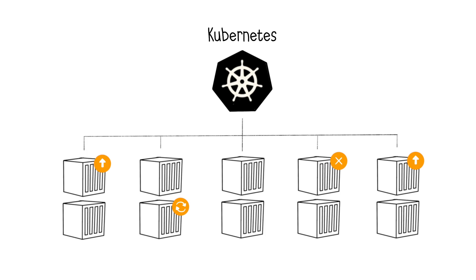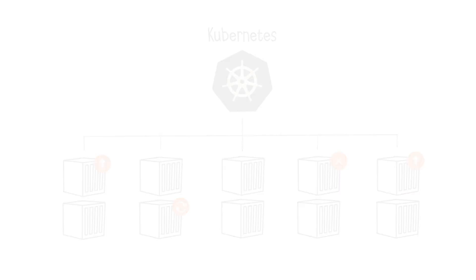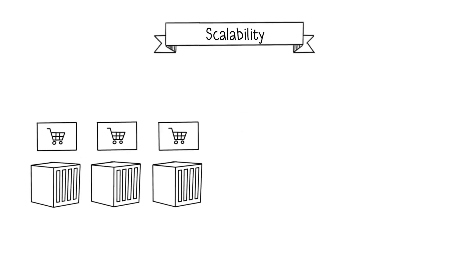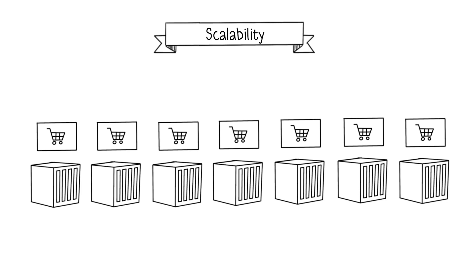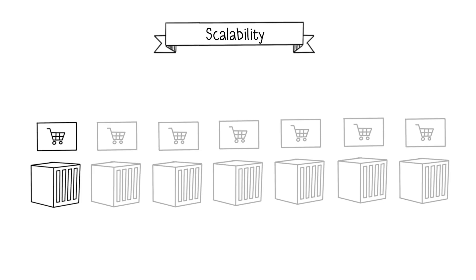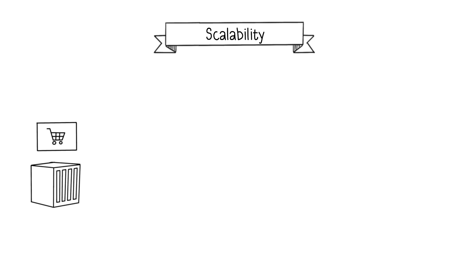The first advantage of cloud-native applications is nearly instantaneous horizontal scalability. With containers, it's very easy to adjust the number of microservices based on demand, almost instantly. If a service experiences increased demand during peak loads, more containers providing that service can be spun up to handle the extra demand. Conversely, when demand decreases, only the necessary minimum of microservices needs to be kept running.